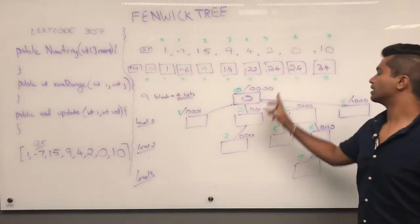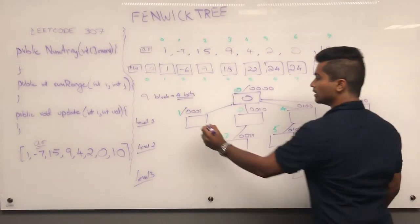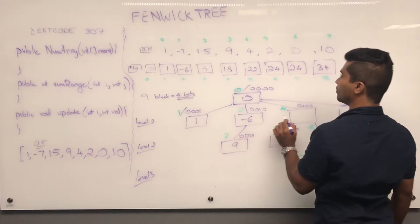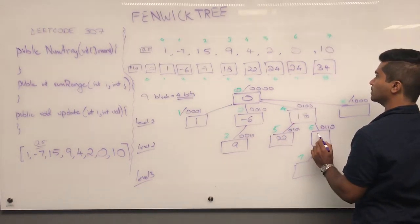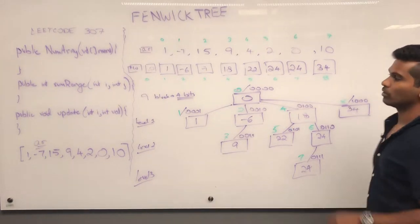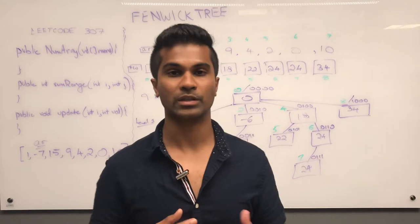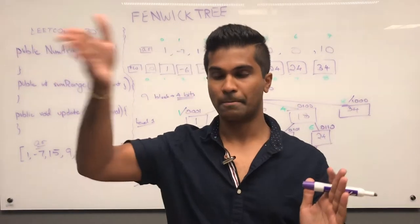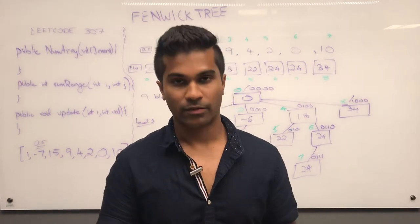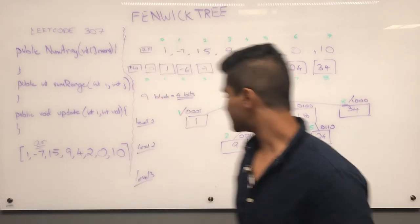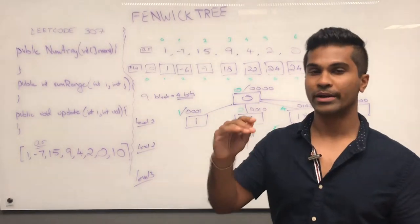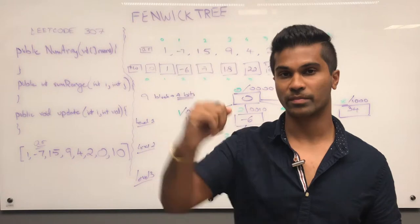Remember, these blocks are representative of positions in the tree. Filling in the tree: position 2 is -6, position 3 is 9, position 4 is 18, position 5 is 22, position 6 is 24, position 7 is 24. Right now our Fenwick Tree holds a cumulative sum of all the integers incrementing upwards, but this is not our final tree.